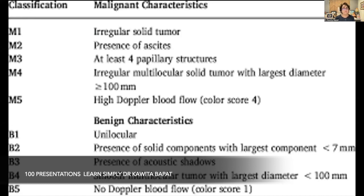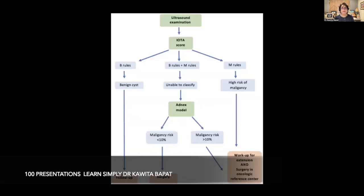To summarize the classifications: malignant features include M1 irregular solid tumor, M2 presence of ascites, M3 four or more papillary structures, M4 irregular multilocular solid tumor with largest diameter over 100 mm, and M5 high Doppler blood flow — color score 4. For benign features: B1 unilocular cyst, B2 solid component with largest diameter less than 7 mm, B3 acoustic shadows, B4 small multilocular tumor less than 100 mm, and B5 no blood flow. Once the ultrasound examination is done, the IOTA score is assessed by B rules and M rules.